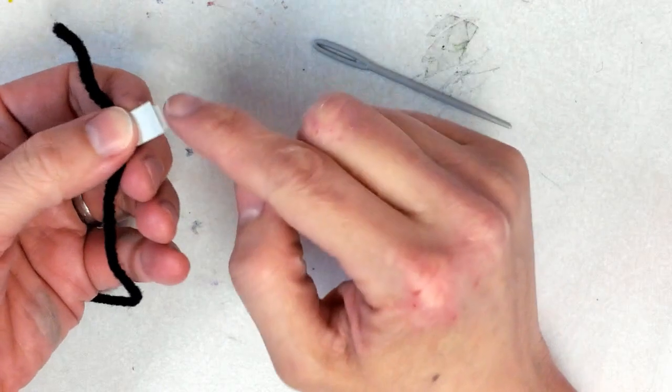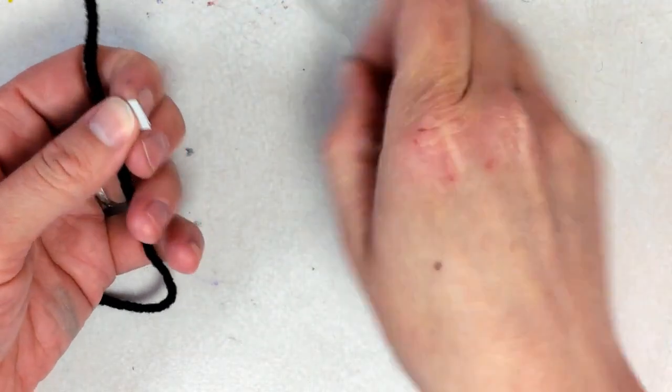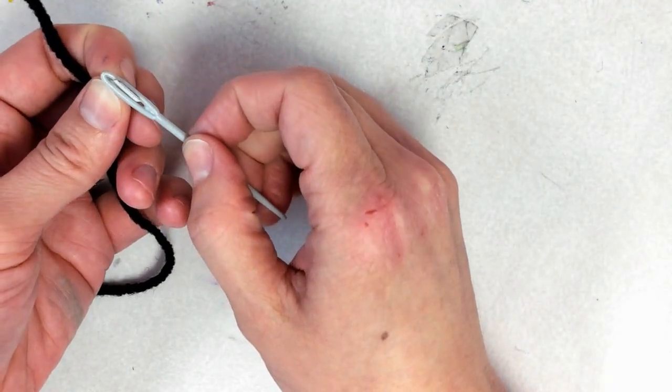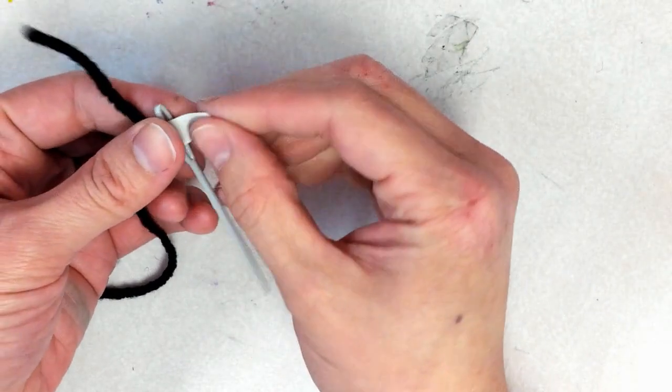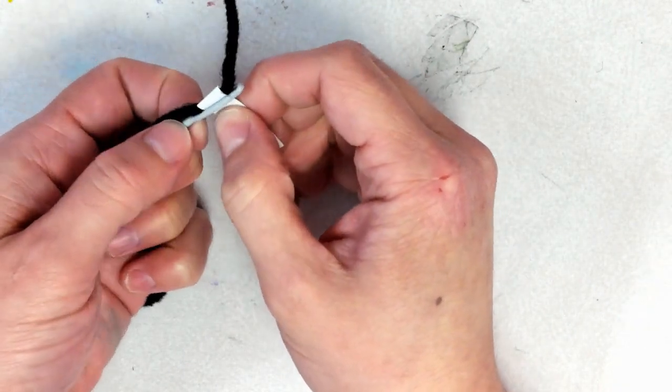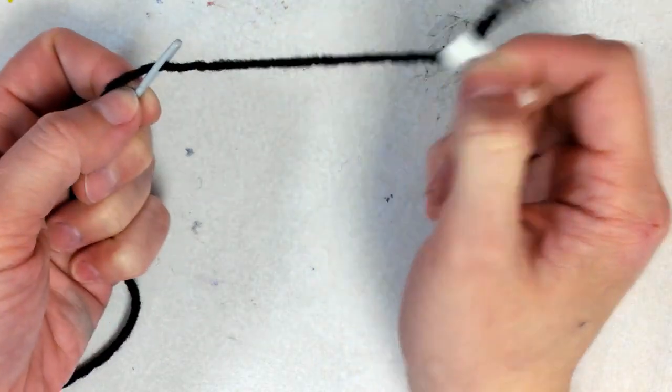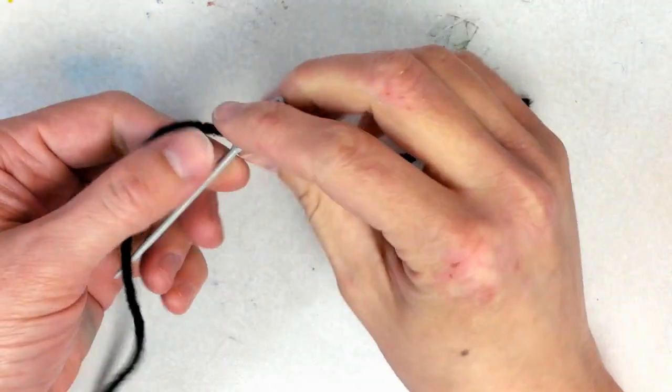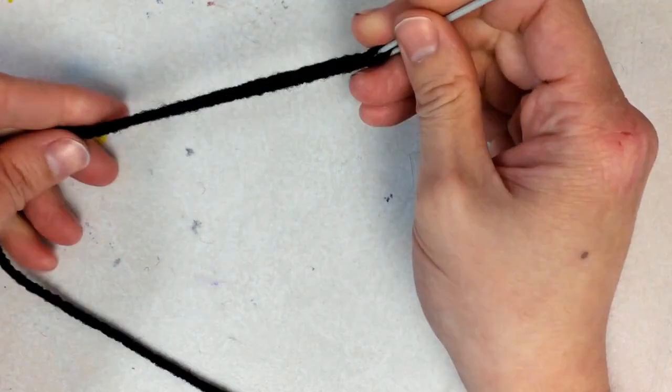And then, you'll take these two ends and see-saw them through the eye of the needle, pinch, and pull through. And that's how you get your needle threaded.